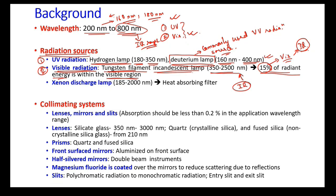IR radiations are associated with heating. They are long-wavelength electromagnetic radiations compared to visible radiations, and care must be taken while using this kind of radiation. There is another visible radiation source — the xenon discharge lamp — which can cover most of the UV-visible radiations from 185 to 2000 nanometers. However, the cost of this lamp is very high.